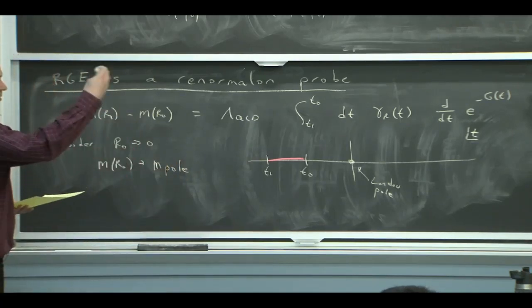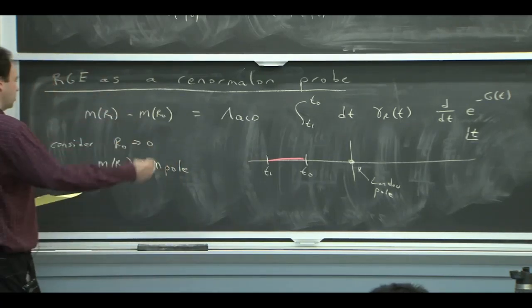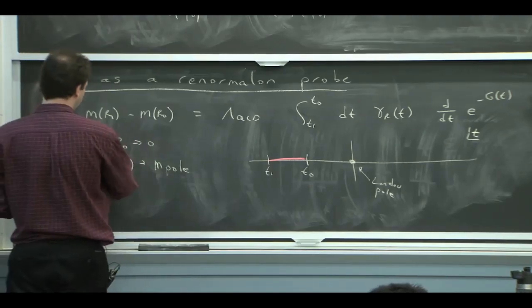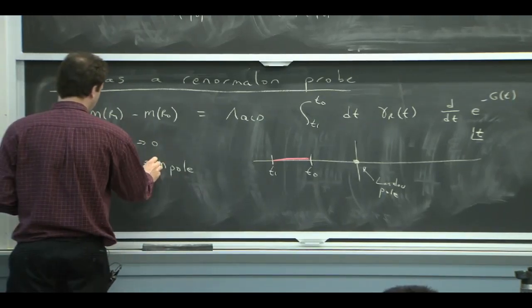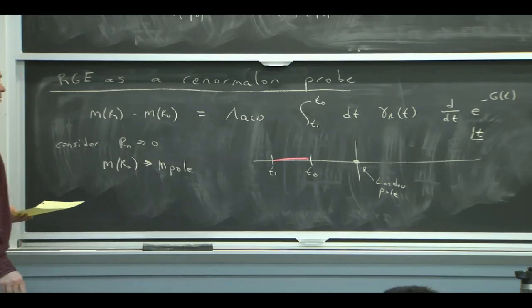Because we had a power of R times a series of alpha of R's, which are just logs of R, the power always wins. And so the mass goes to the pole mass in that limit that R0 goes to 0.